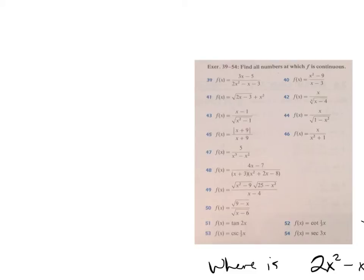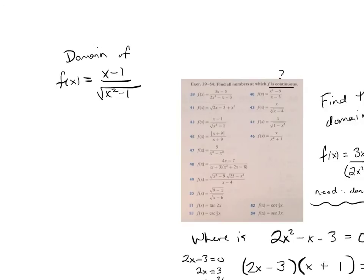43 is combining square root with denominator. Remember, they're asking us if f is continuous. What we hear, we hear what we want to hear. We're just finding the domain. So, we want the domain of f of x equals x minus 1 over the square root of x squared minus 1.